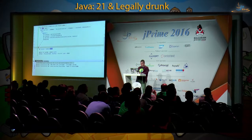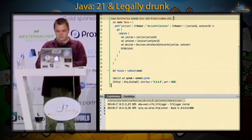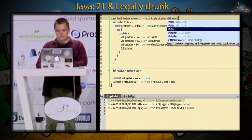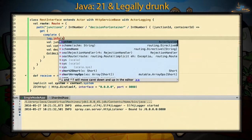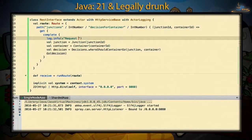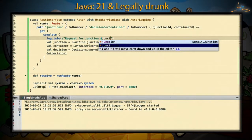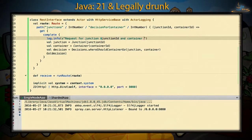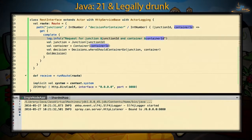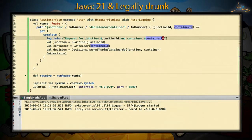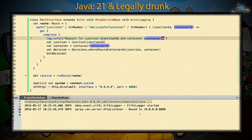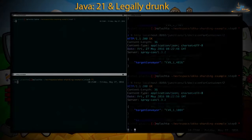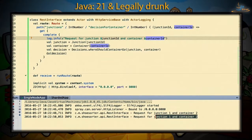One thing is missing — we don't know anything from inside the application. Let's add some logging to our REST interface actor. Adding logging is very easy — we just need another trait, ActorLogging. Like that, we have a log object we can use. We log the request for junction ID and container ID. After restarting the application and sending two requests, the logs are there.